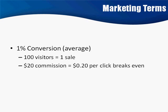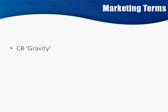Conversion is a word that you definitely want to be very familiar with. Another term is ClickBank Gravity — by the way, if you see 'CB,' that stands for ClickBank, you'll see that a lot. Gravity is a way that ClickBank categorizes products in their marketplace.